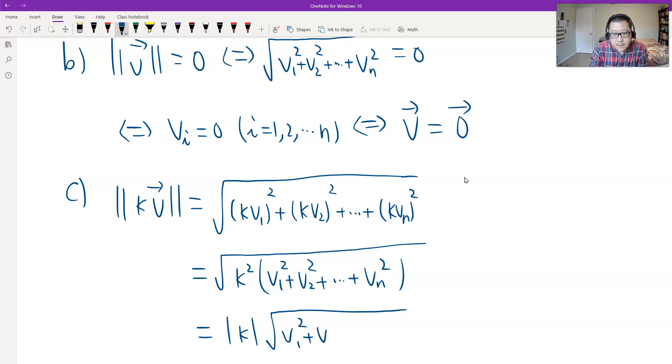And then times what do we have here? V1 squared, V2 squared, Vn squared. By the definition this is just the norm of V. This is the proof for this theorem.